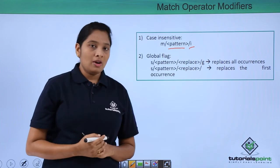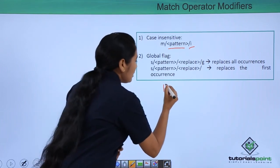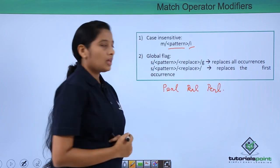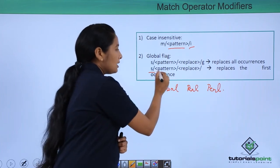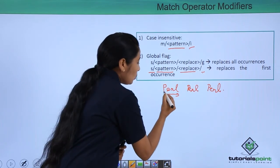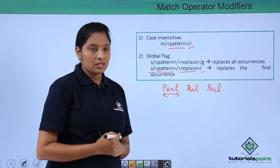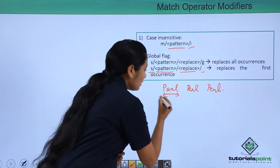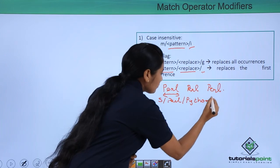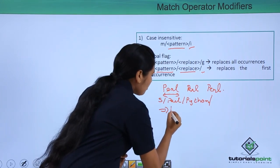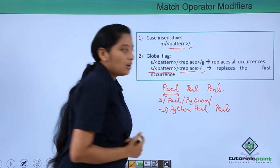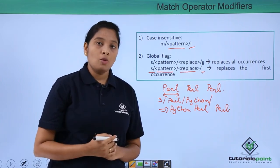Now let us see about the global flag. If in a string you have something like pearl, pearl, pearl, when you substitute a certain pattern with some other pattern without a global flag, then only the first occurrence will get replaced. For example, if I want to replace pearl with python, using s slash pearl slash python, this will output python but all the remaining occurrences will stay the same. To replace all occurrences, use a global flag at the end.